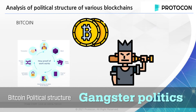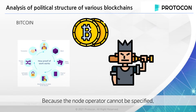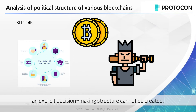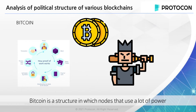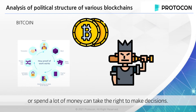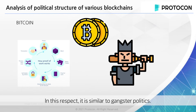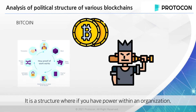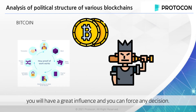Bitcoin uses a POW algorithm, so the node operator cannot be specified and an explicit decision-making structure cannot be created. Bitcoin is a structure in which nodes that use a lot of power or spend a lot of money can take the right to make decisions. In this respect, it is similar to gangster politics — it is a structure where if you have power with an organization, you will have great influence and can force any decision.